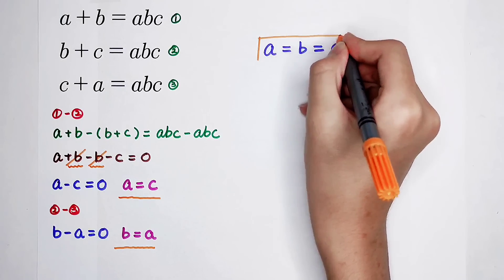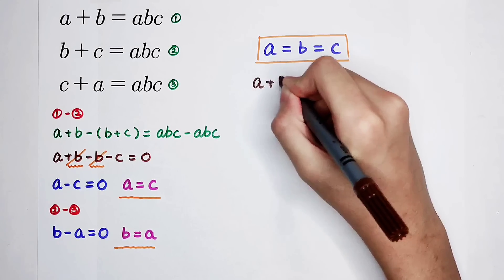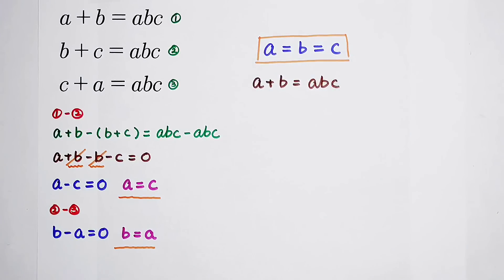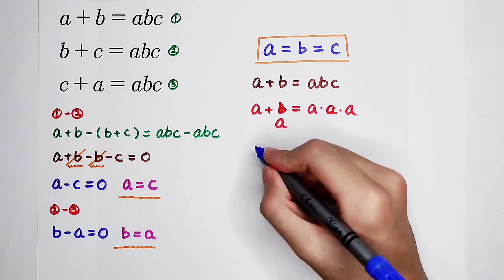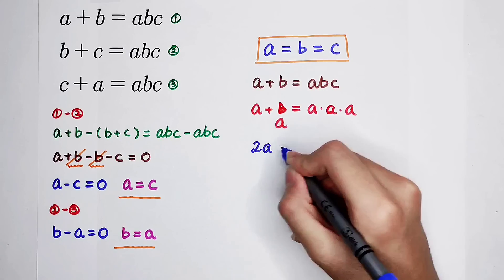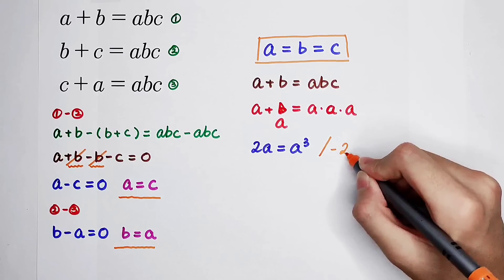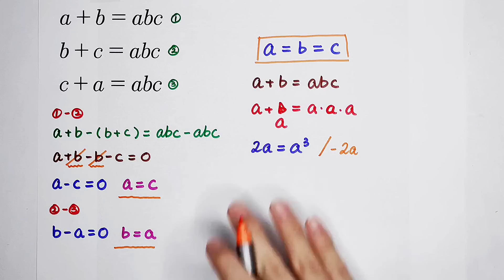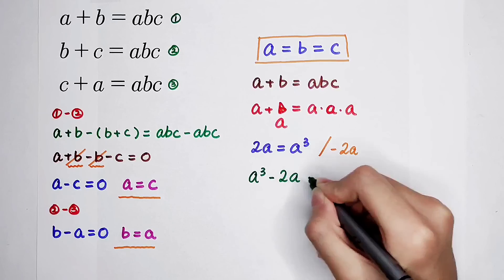Now we know the relationship between A, B, and C. We rewrite the first equation: A plus B is equal to ABC. Because A equals B equals C, we replace all variables with A. The left-hand side is A plus A, which is 2A, and the right-hand side is A cubed. Subtracting 2A from both sides gives A cubed minus 2A equals 0.